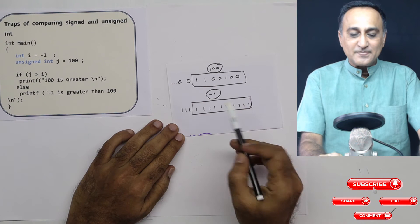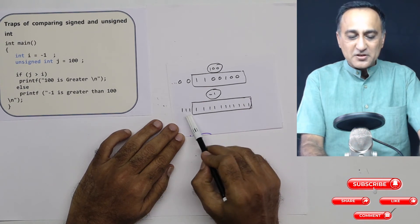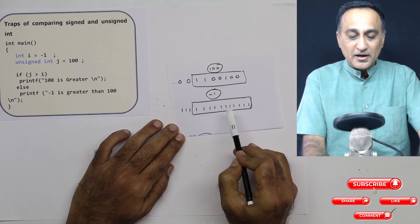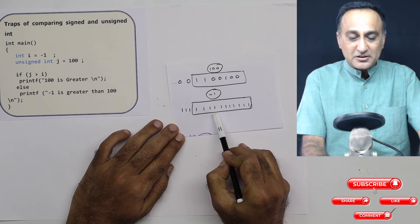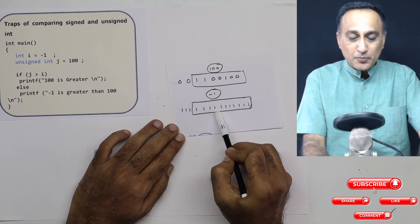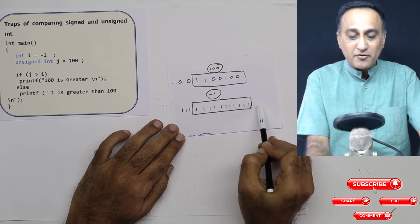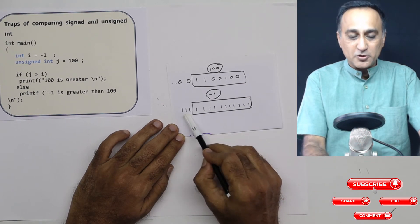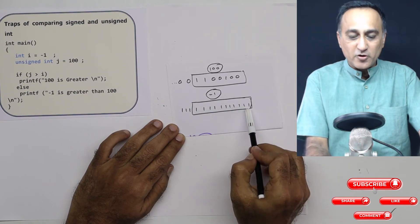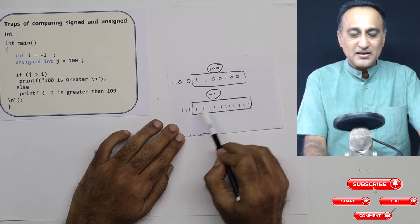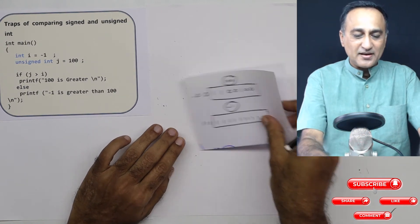Because internally, negative numbers are represented with 2's complement. And when 2's complement numbers are compared with unsigned, when you promote this fellow, this becomes like a very big positive number because it's going to be a really huge positive number when you convert it from binary to decimal. That's why it's going to say -1 is greater than 100.